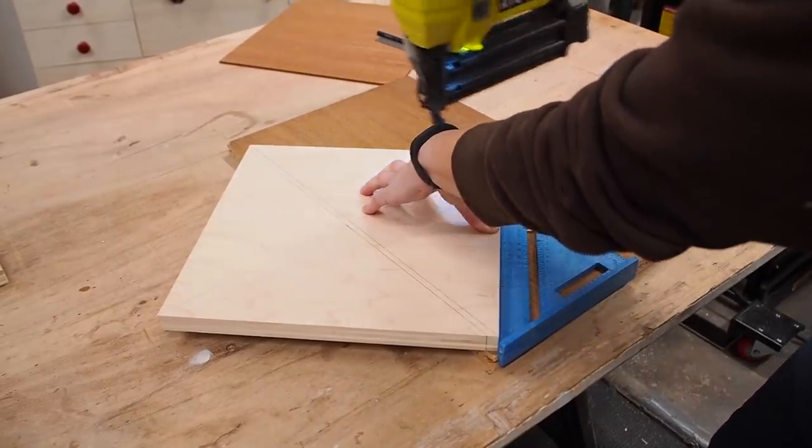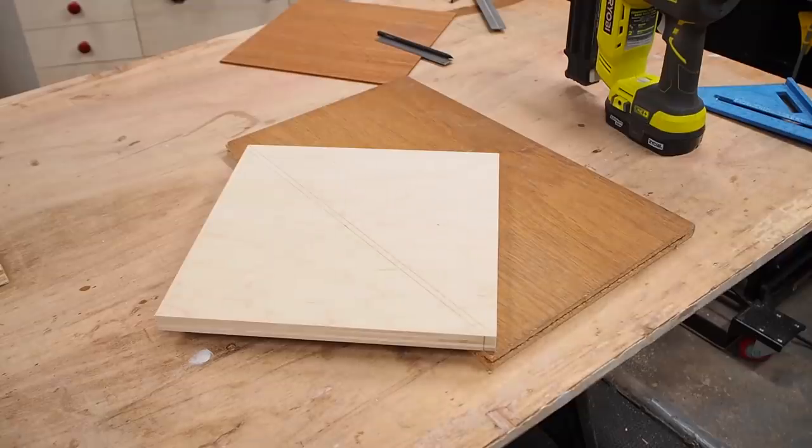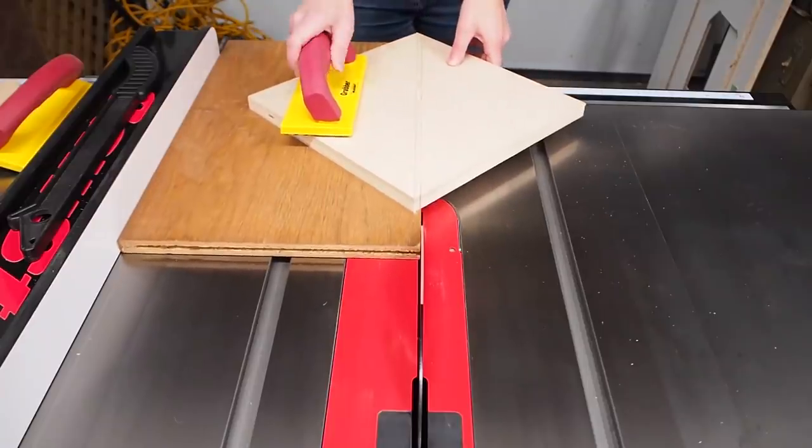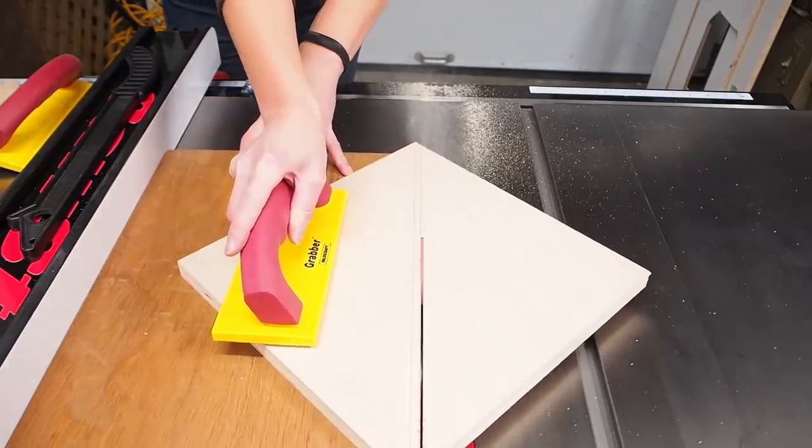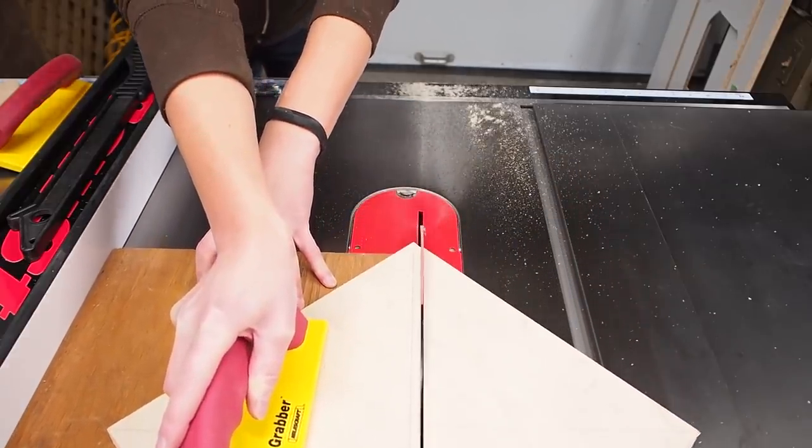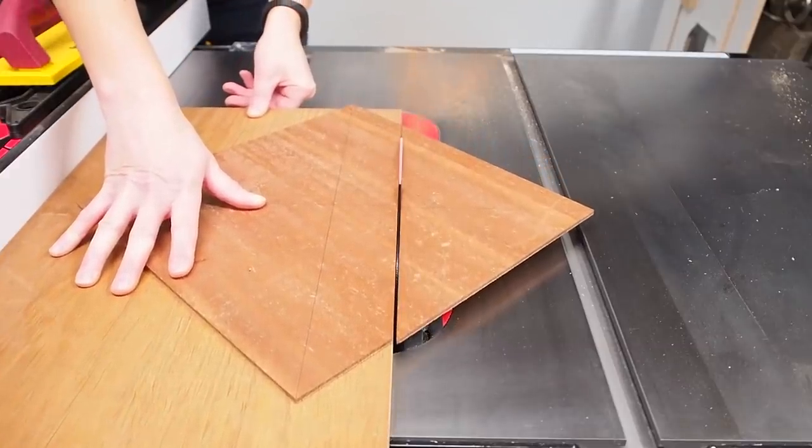I used a couple brad nails to hold it in place and then made the cut on my table saw. And I did the same for the second piece which has a greater offset.